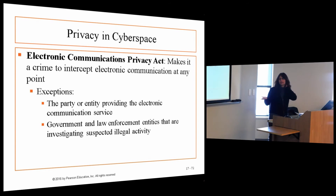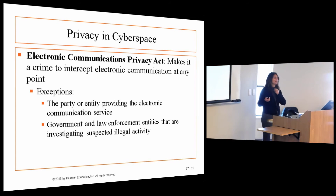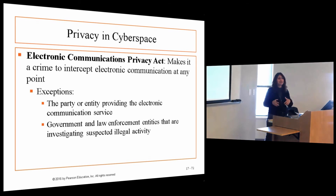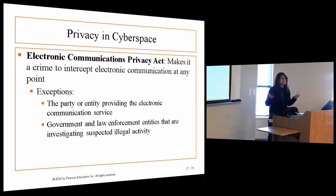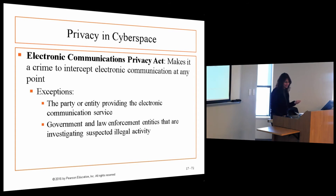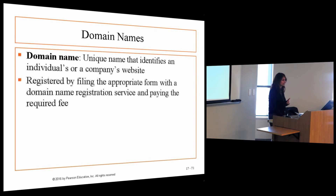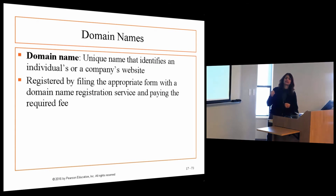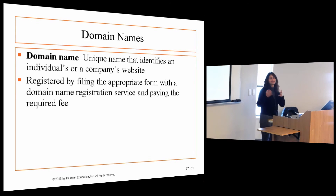Two other quick things in this chapter: privacy in cyberspace — we'd like to think there is privacy. Federal law makes certain violations a crime, and laws are going out of their way to be the policeman and ensure fairness. But we all know that technology moves a lot faster than the laws designed to regulate it. The key point I want to make concerns domain names — this could have been in the intellectual property chapter, but it's discussed separately here.